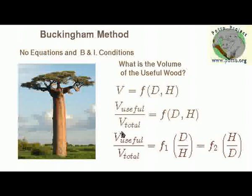If it is correct, then on the left hand side we will have a ratio of volumes which is dimensionless, therefore the right hand side has to be dimensionless as well. That means it either will be the diameter over the height or the height over the diameter.